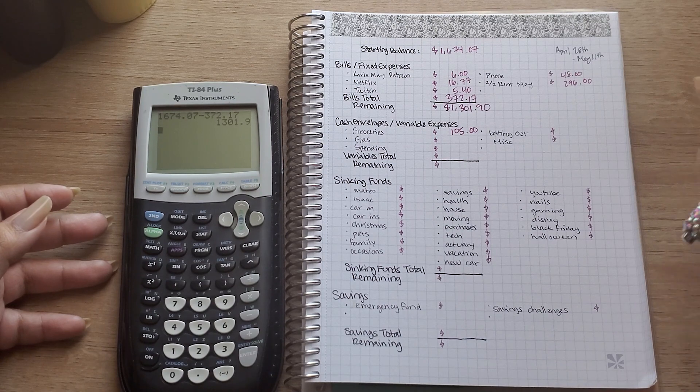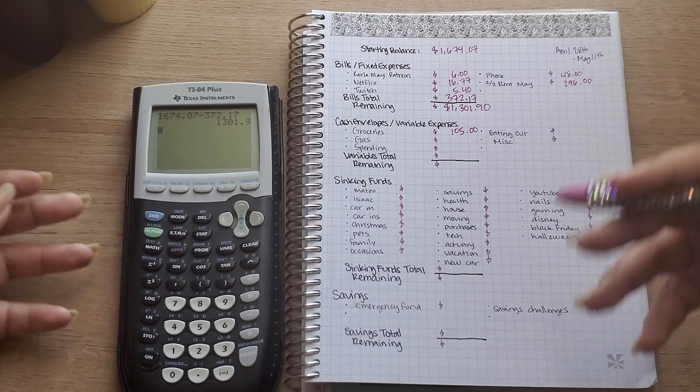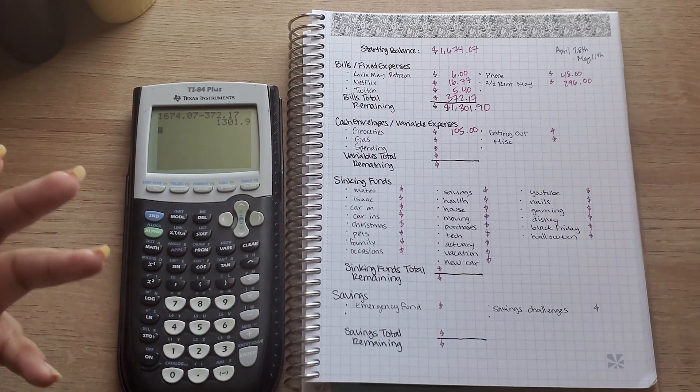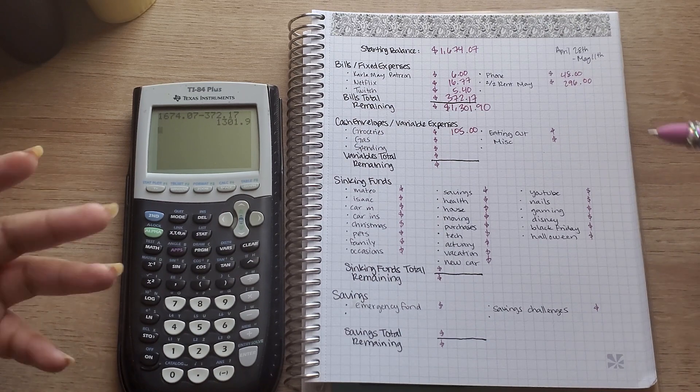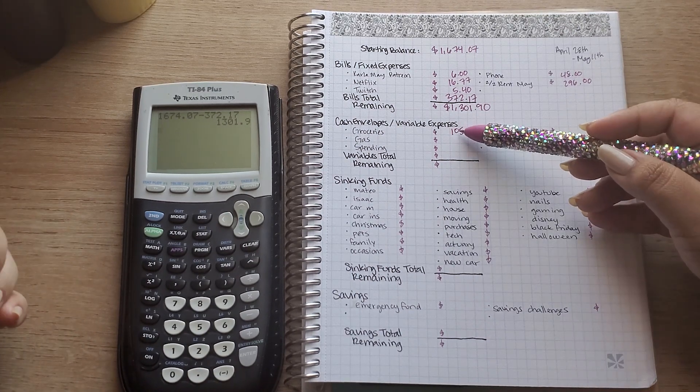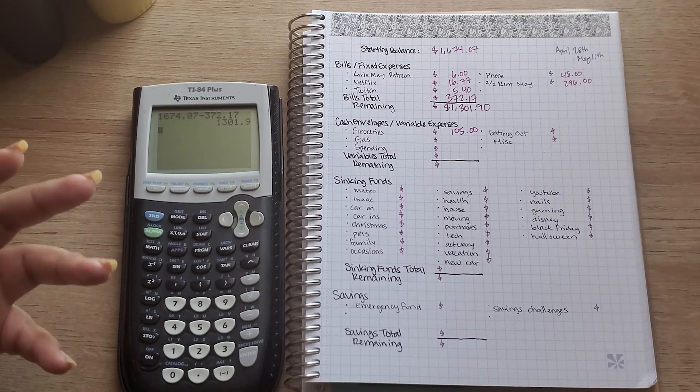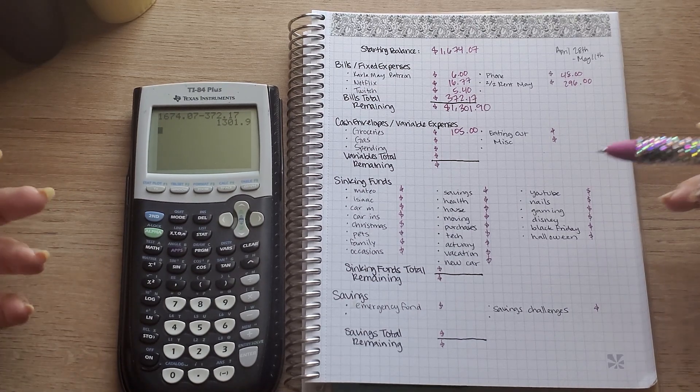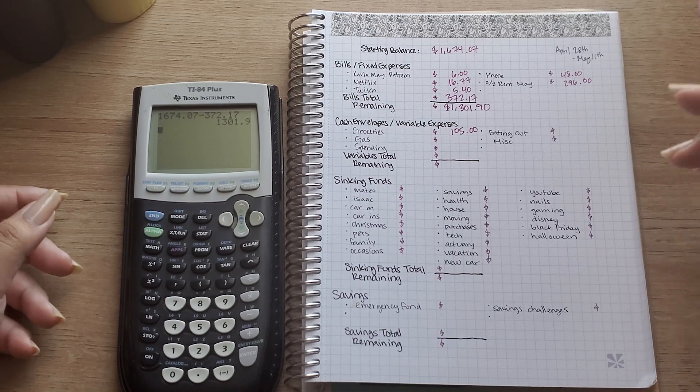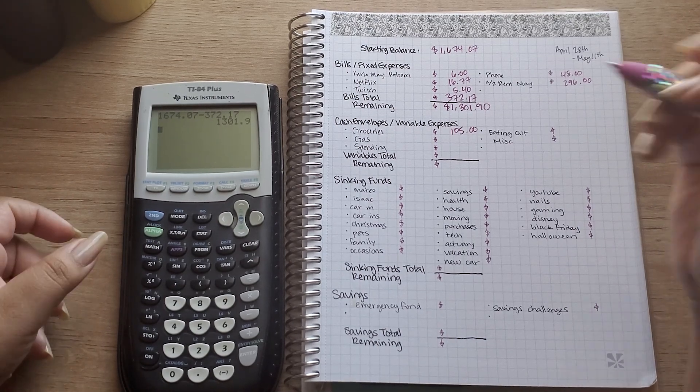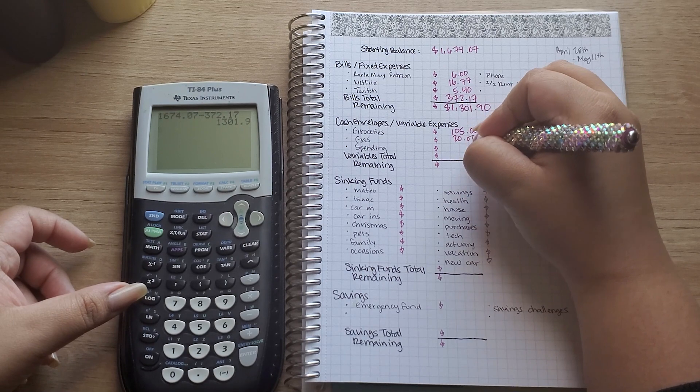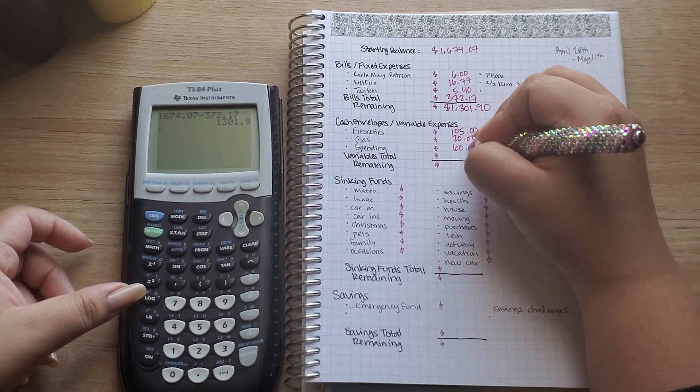I think that is going to be enough for two weeks at least for me. Again, we all share expenses not only the utilities and rent but food expenses. So sometimes I'll buy something for my nephew or my family in general to cook for them for a few days and then my sister will do the same other days of the week. Gas for this paycheck I'm going to budget $20 and then spending is my usual $60.